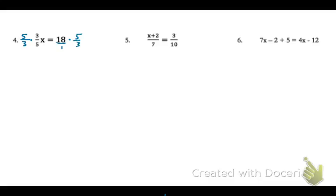And we can put the 18 over 1. So now we're multiplying fractions together. So 5 thirds times 3 fifths is 15 fifteenths, which reduces to 1. I don't need to write that 1. 18 times 5 thirds, I can divide a 3 out of any numerator and any denominator. So I can divide it out of my 18.